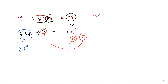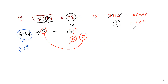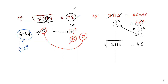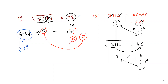Another example: 2116, which is 46 squared. Find the DigitSum of 2116: the 9 is cancelled, leaving 1. For 46: 4 plus 6 equals 10, and 1 plus 0 gives 1. Since this is a square root problem, square the DigitSum: 1 squared is 1. Both DigitSums are 1 and matching, so the answer of 46 is correct.